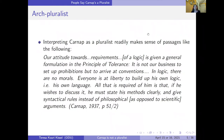Let's talk about who thinks Carnap is a pluralist and why. This is not an unreasonable way to interpret a lot of what Carnap says. If we interpret Carnap as a logical pluralist — thinking there's more than one logic that is correct — it quite readily makes sense of a lot of what he says, including his articulation of the principle of tolerance and the famous quote: 'Our attitude towards the requirements of a logic is given a general formulation in the principle of tolerance. It is not our business to set up prohibitions, but to arrive at conventions. In logic, there are no morals.'